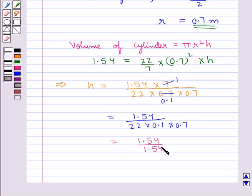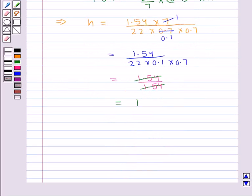This 1.54 is cancelled with this 1.54 and so this becomes equal to 1. Thus we get h is equal to 1. So we have height of cylinder is equal to 1 meter.